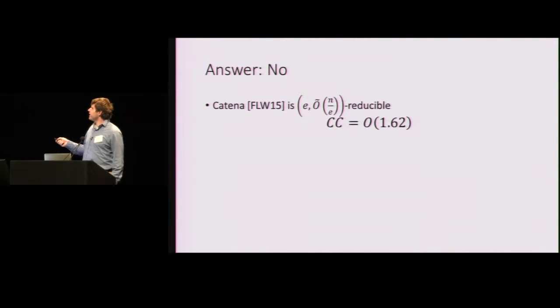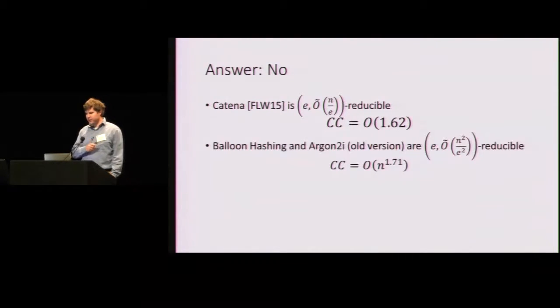So Katana is actually kind of maximally depth reducible. So if I remove E nodes, I can reduce the depth to N over E. That's kind of as bad as it gets. And a consequence of this is that the cumulative cost of computing this IMHF scales as, oh, sorry, end to the 1.62. This is in the exponent here, not this isn't order one. It's not constant time, but end to the 1.62. All right. So balloon hashing and Argon2i are also depth reducible. Slightly better than Katana, but still depth reducible. And we get an attack which has cost scaling as N to the 1.71. The latest version of Argon2i is actually seems to be a little bit better, but it still is ED reducible. And in particular, the cumulative complexity scales is N to the 1.77.